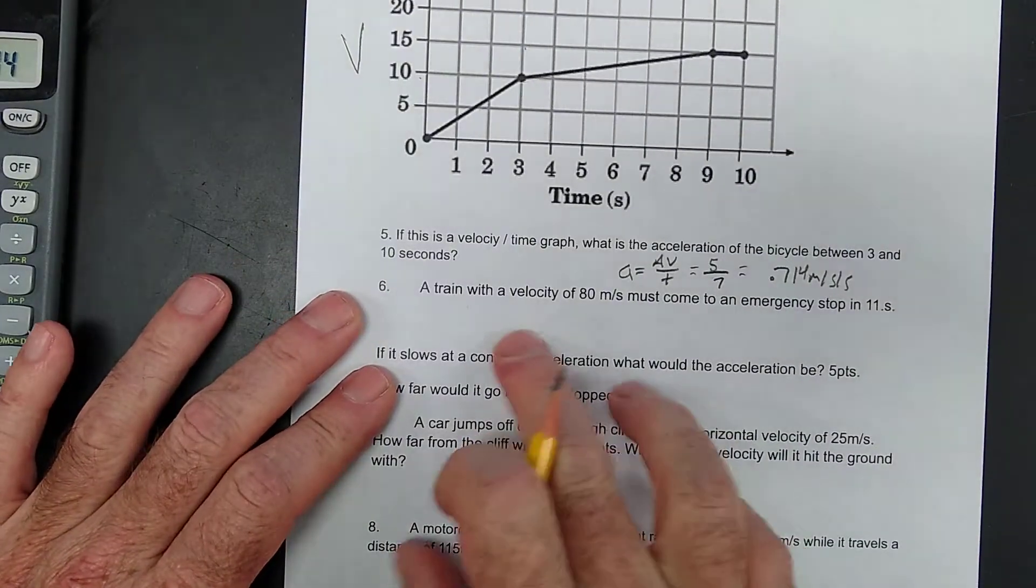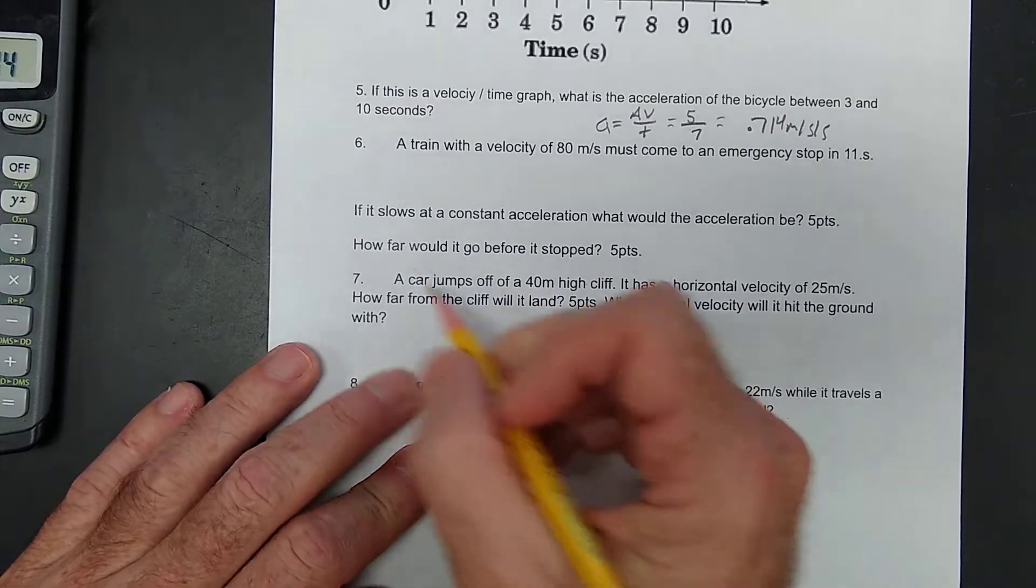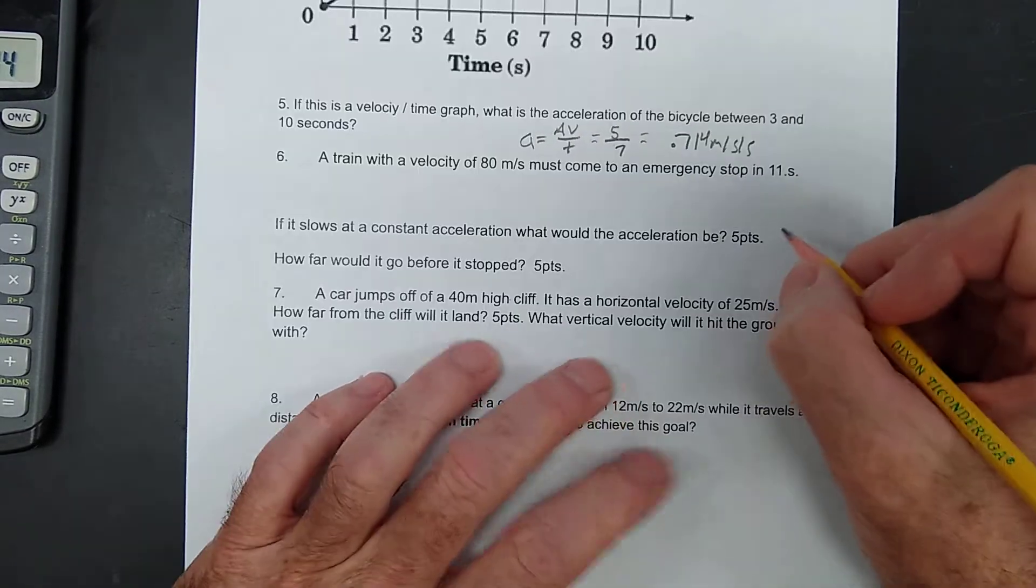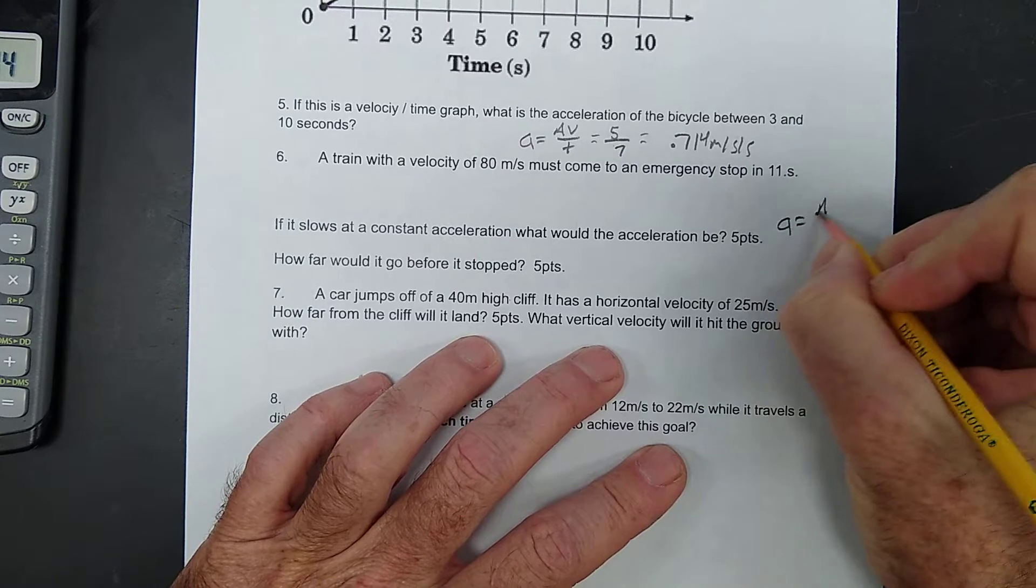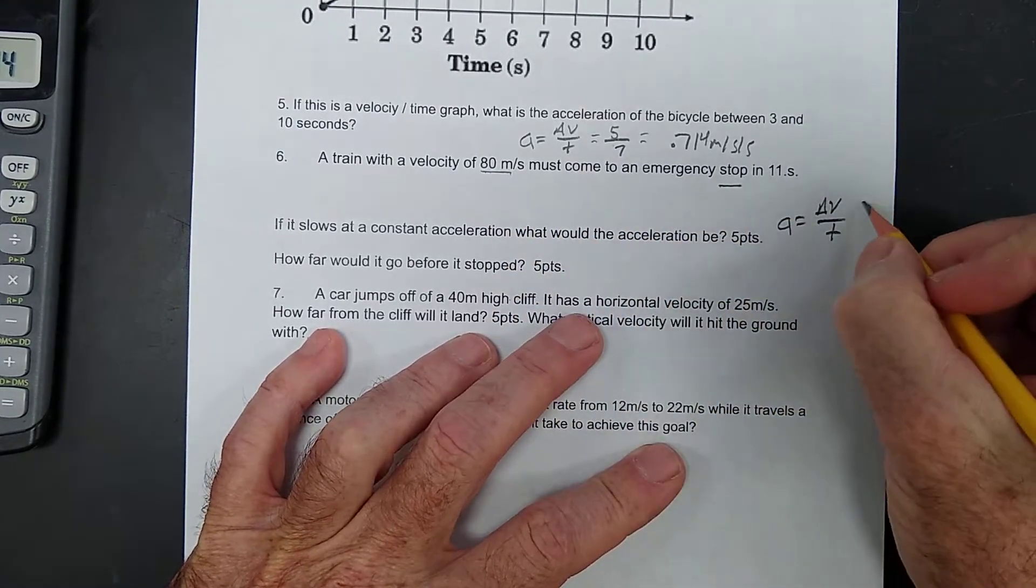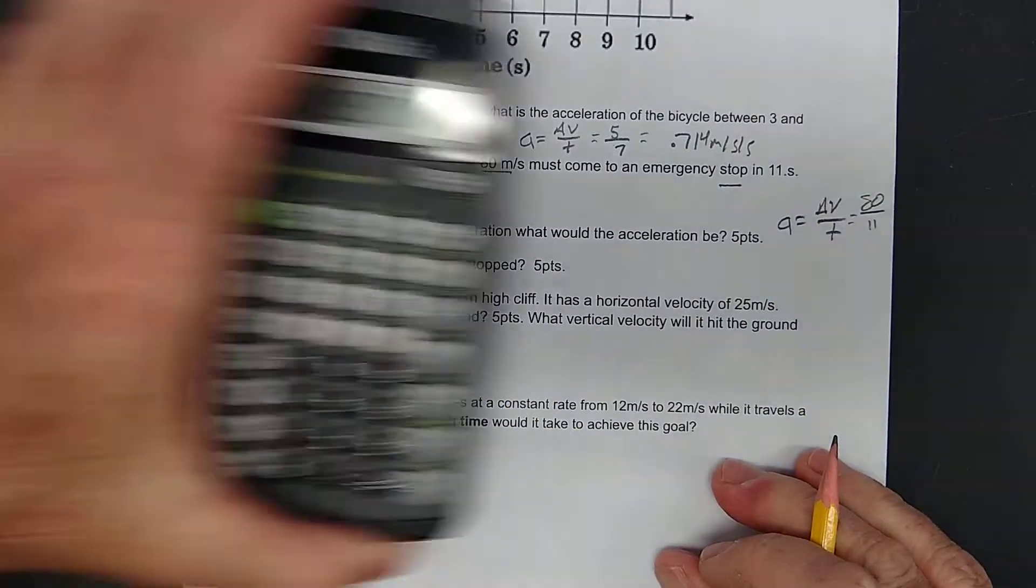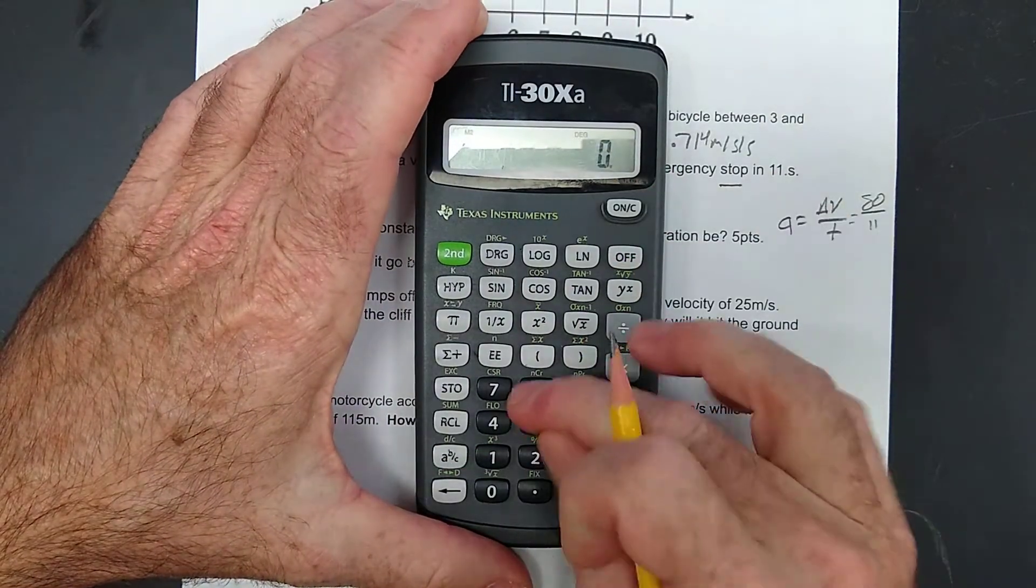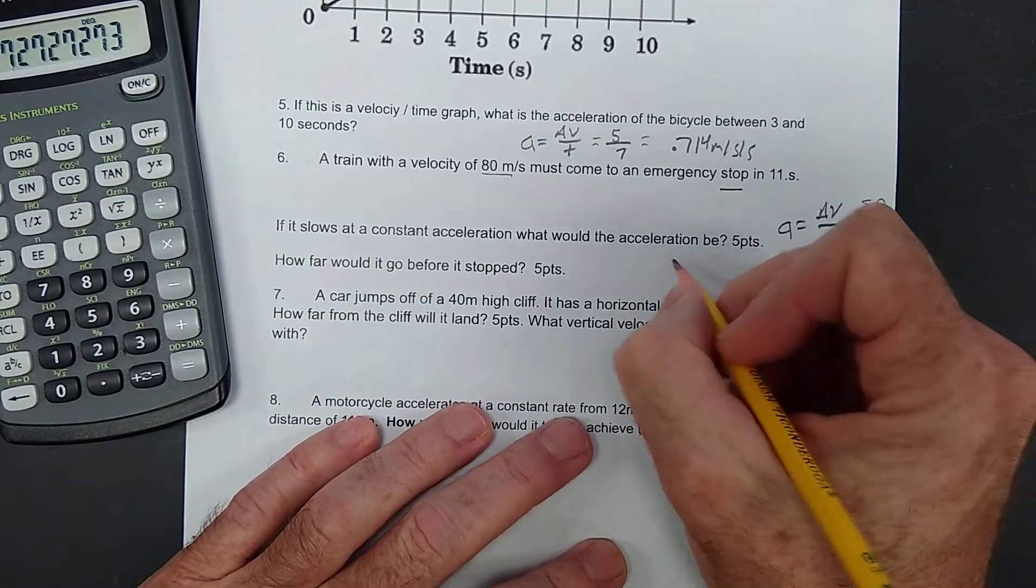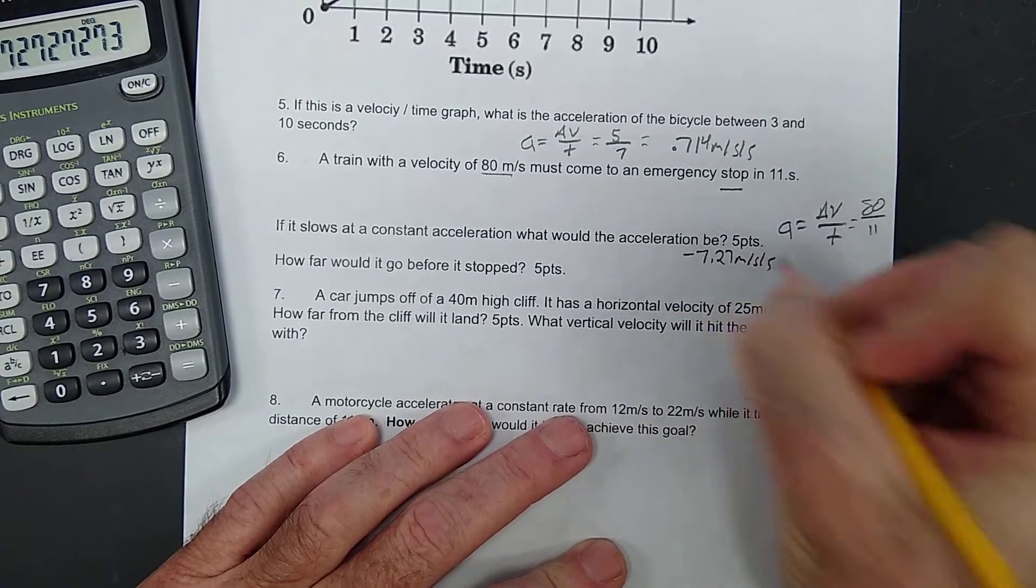A train with a velocity of 80 meters per second must come to an emergency stop in 11 seconds. If it slows as a constant acceleration, what would that acceleration be? Okay. Well, very simply, acceleration equals change in velocity over time. 80 meters per second to a stop. So, the change in velocity is 80 meters per second. How much time did it have to stop? 11 seconds. 80 divided by 11. I bet you didn't realize that was going to be that easy. This acceleration is negative 7.27 meters per second per second.